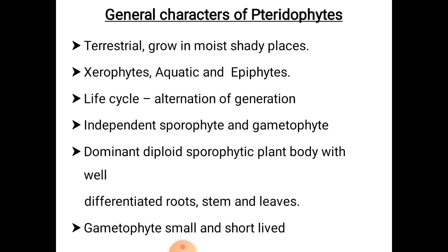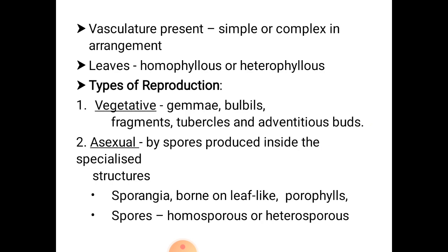The plant body is a diploid sporophyte which is differentiated into root, stem and leaves. The vascular tissues are very well developed. The leaves may be homophyllous or heterophyllous. There are three types of reproduction in pteridophytes: vegetative, asexual and sexual methods.